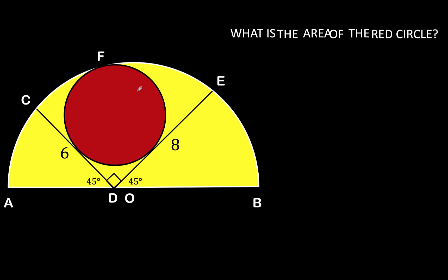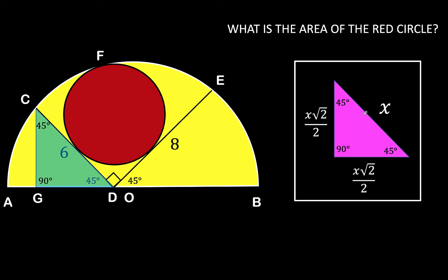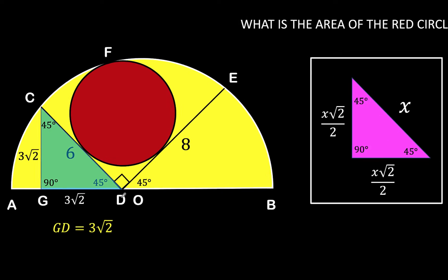Now let's solve this problem together. Let's begin by constructing this right triangle here — let's call this point G. Since this angle is 45 degrees and we have a right angle here, the other angle is also 45 degrees, because the sum of the three angles of a triangle is 180 degrees. So we have an isosceles right triangle with hypotenuse 6 units. For a 45-45-90 triangle, each leg equals the hypotenuse times √2/2, so each leg is 3√2. The length of segment GD is 3√2.